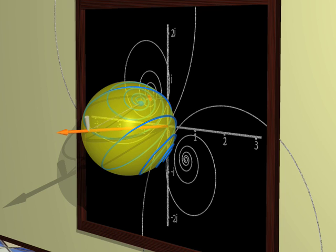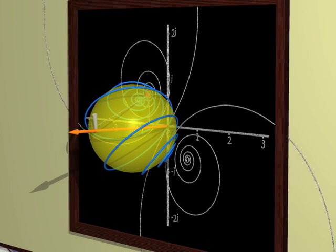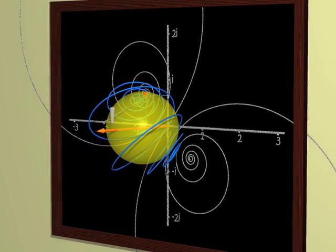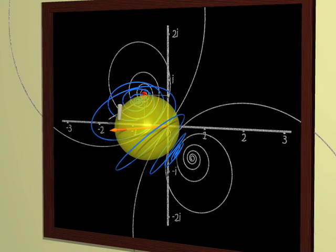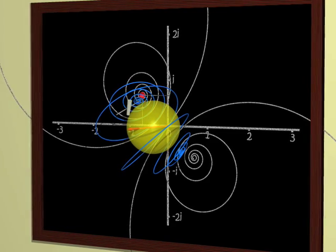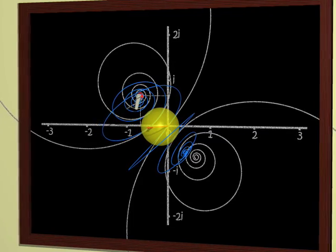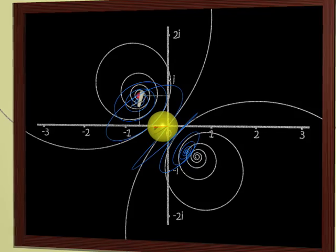Therefore, mathematicians say that the sphere is a complex projective line. Why line? Because one needs only one number to describe its points. Why complex? Because this number is complex. Why projective? Because we added a point at infinity using the projection.